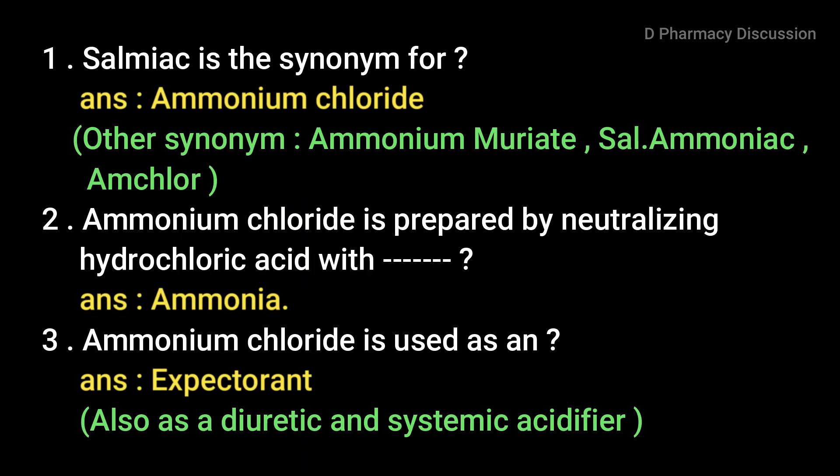Let's check out the answers. First question: 'Salmiac' is the synonym for ammonium chloride. Other synonyms for ammonium chloride are ammonium muriate, sal ammoniac, and am chlore. Second question: ammonium chloride is prepared by neutralizing hydrochloric acid with ammonia.